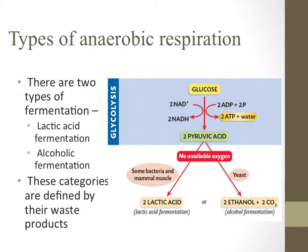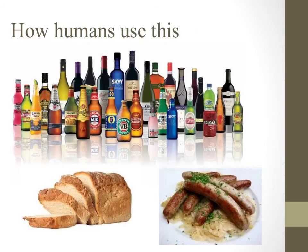Both types of fermentation are named after their waste product. Lactic acid fermentation produces lactic acid, and alcoholic fermentation produces ethanol, a type of alcohol. Bacteria can perform lactic acid fermentation, the process by which yogurt, sauerkraut, and cheeses are made. Organisms such as yeast can perform alcoholic fermentation — bread, root beer, and every imaginable alcoholic beverage is produced by yeast alcoholic fermentation.